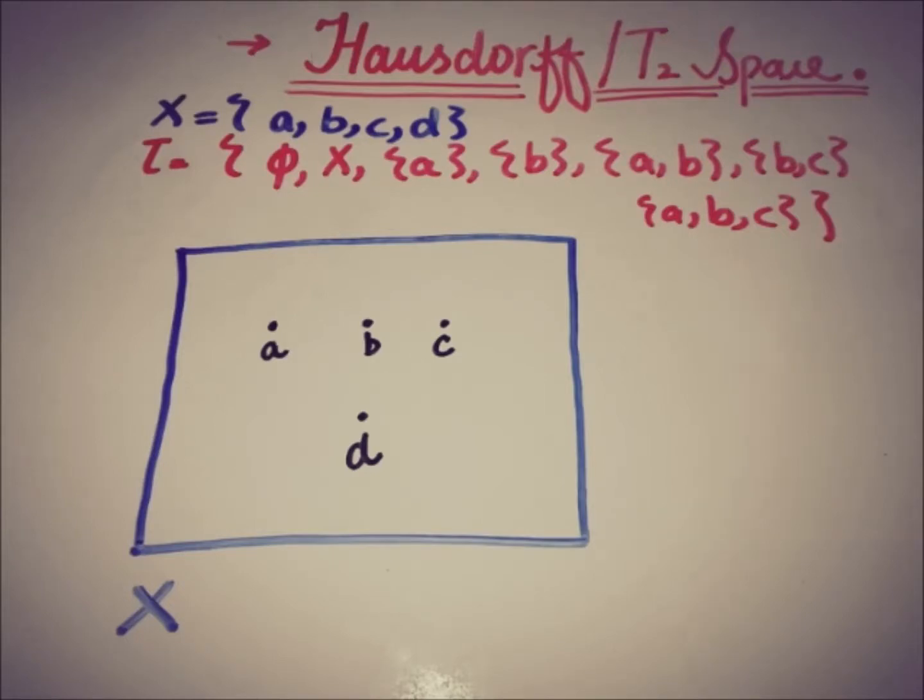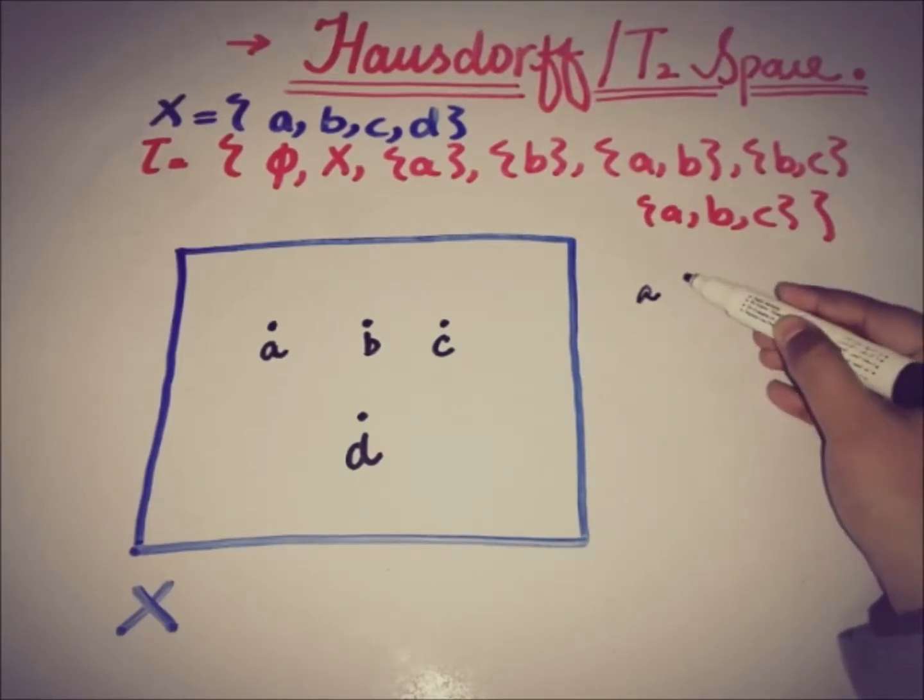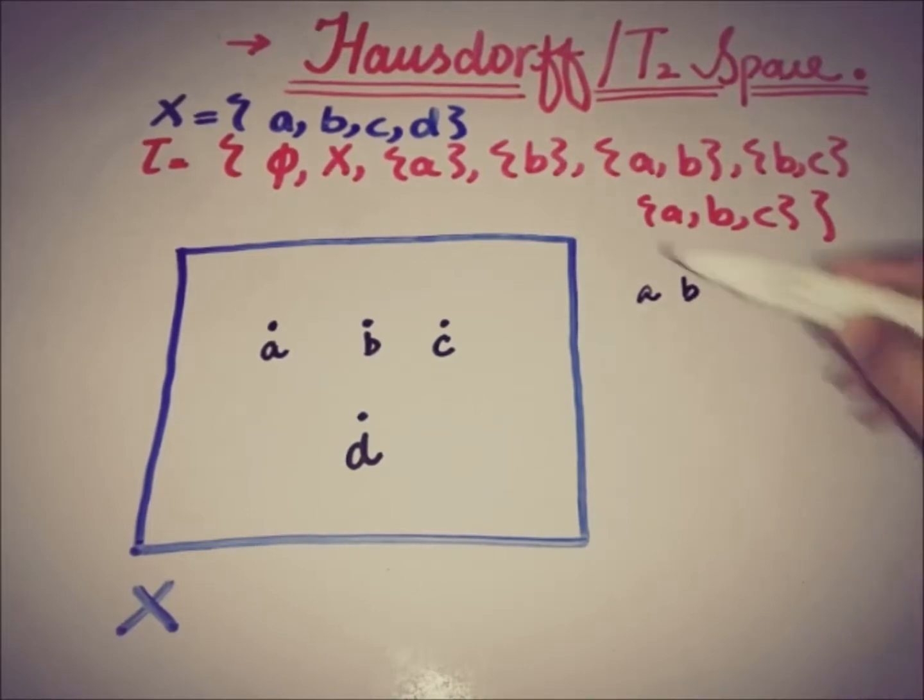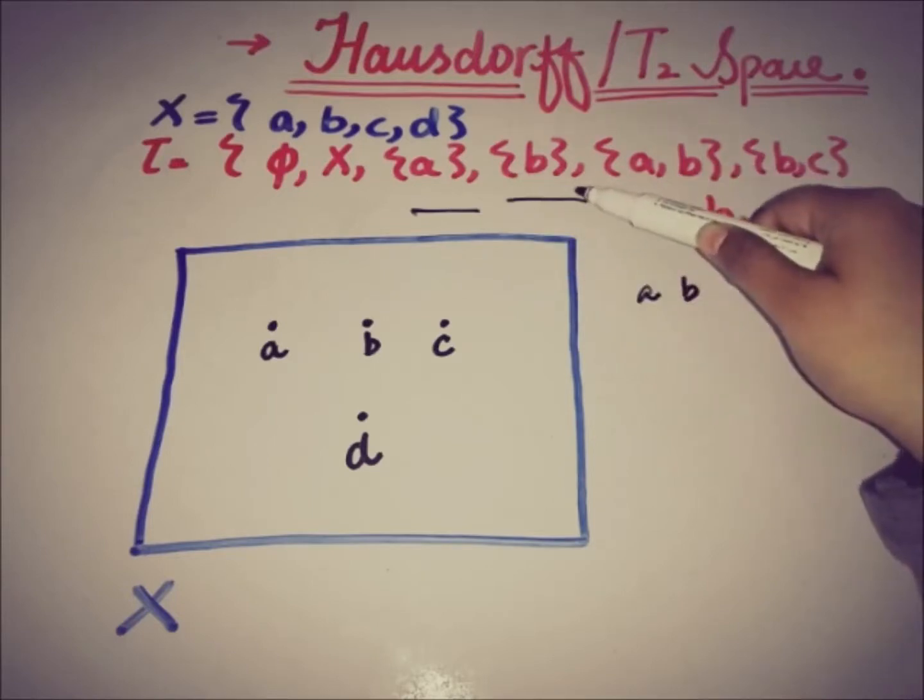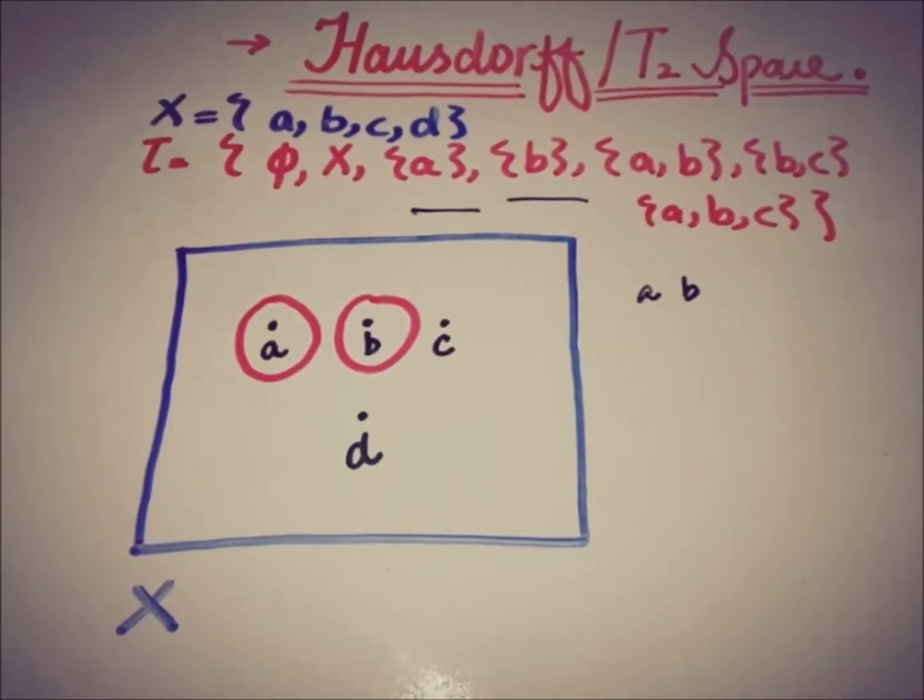If we pick any two points, let's say we have A and B, then there is an open set A and there is an open set B such that the intersection of both of the open sets is empty. So this is true.